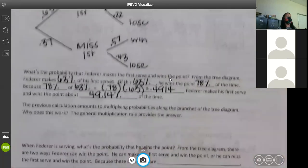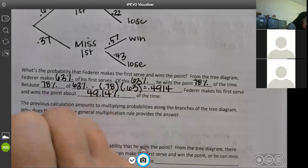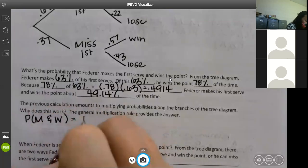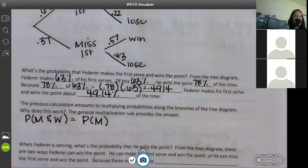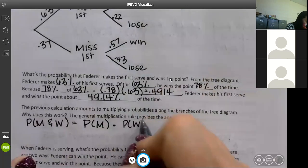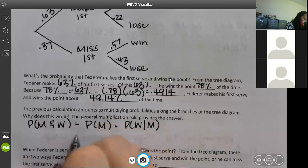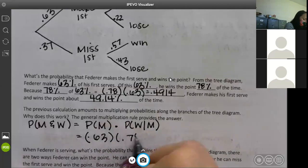Give me one more minute. He's really, really good. All right. The previous calculation amounts to multiplying probabilities along the branches of the tree diagram. Why does this work? The general multiplication rule. So listen to this. The probability that he makes his first and wins is the probability that he makes. That's where that 63 came from. Times. Now we have to have that conditional because we made the condition that it was given that he won or that he made the first one. And that's where your formula comes from. So it might be a little bit easier to look at it from there than it is to have to proof it out or whatever that we just did. So 0.63 was what we did times that 0.78, which gave us the 49.14%.